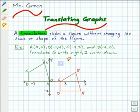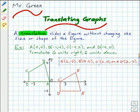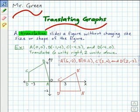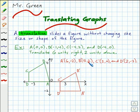Here are the coordinates of the image. A prime is at 6, negative 2. B prime is at 5, 2. C prime is at 2, 0. And D prime is at 2, negative 2.